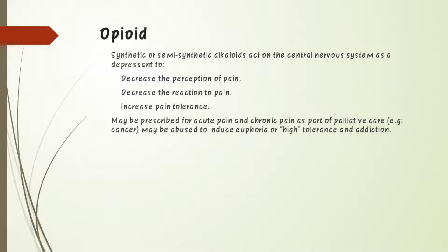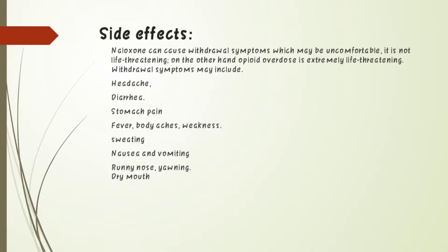Opioids — both synthetic and semi-synthetic alkaloids — act on the CNS as depressants. They decrease the perception and reaction to pain and increase pain tolerance. They may be prescribed for acute pain and chronic pain as part of palliative care, and may be abused to induce euphoria, leading to high tolerance and addiction.